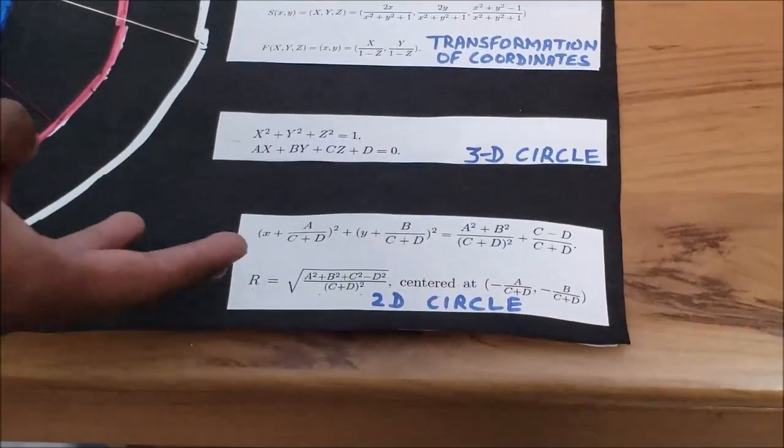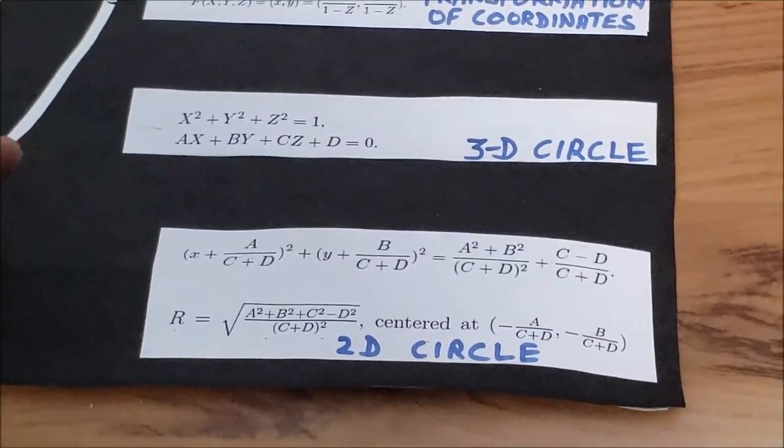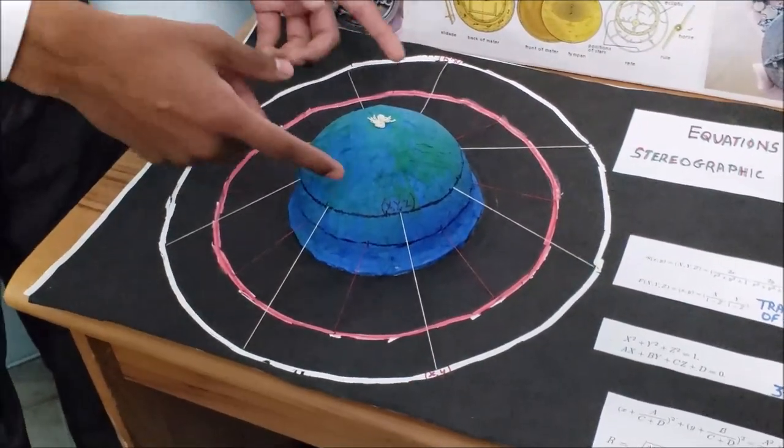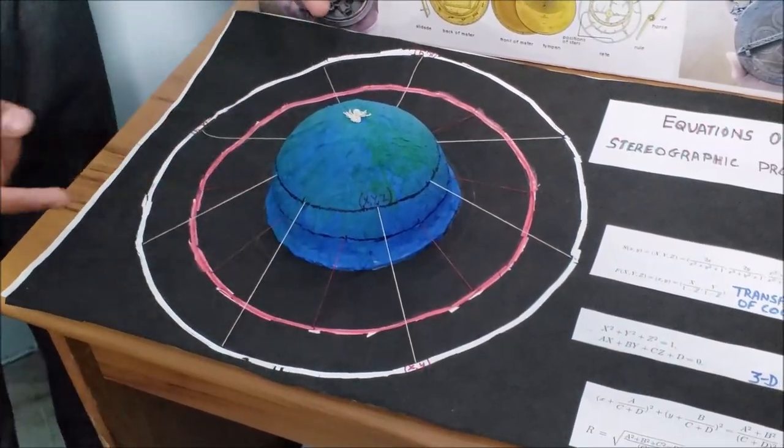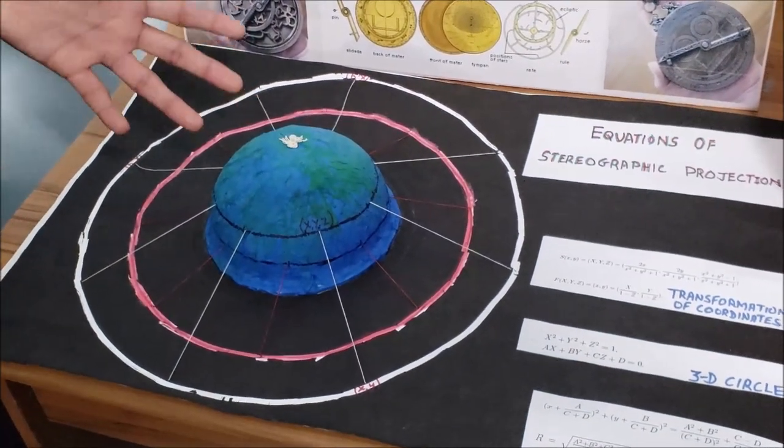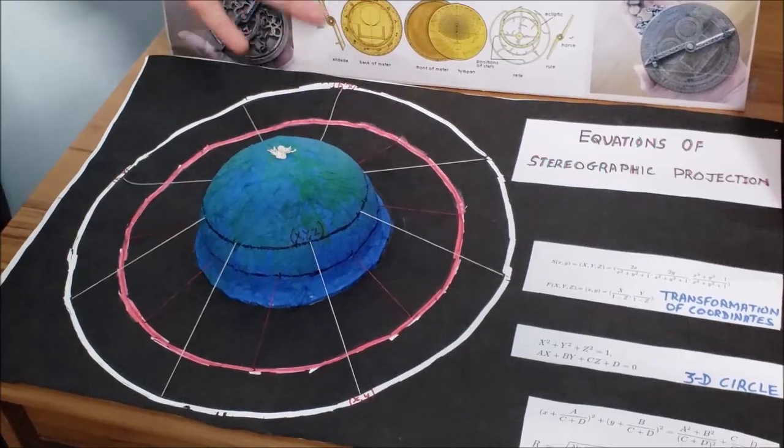Now the third set of equations allows us to know the equation of the projected circle once we figure out the equation of the small circle. So these three sets of equations are sort of the most important equations that we need to know when we're dealing with stereographic projections.